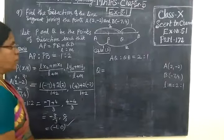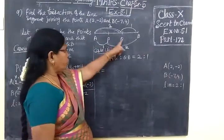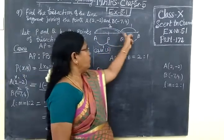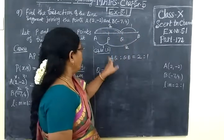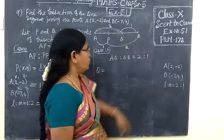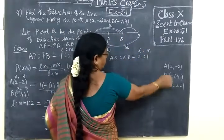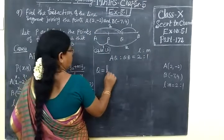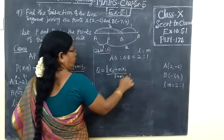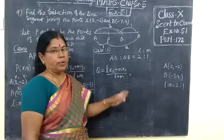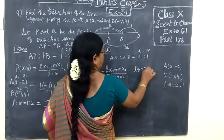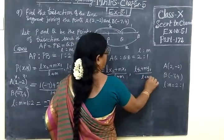So come to case 2. We are considering the points P and Q. This is minus 1 comma 0. So AQ is to QB equal to 2 is to 1. Now you write the section formula LX2 plus MX1 by L plus M. Internally, externally put plus here. So plus then LY2 plus MY1 by L plus M.